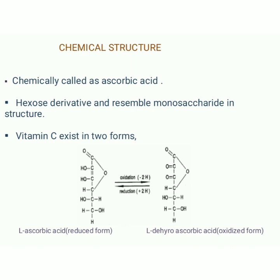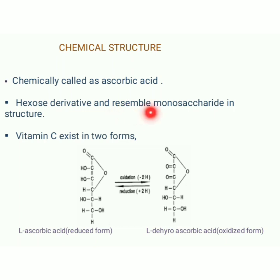Chemically, Vitamin C is called ascorbic acid. Other names include ascorbate. Ascorbic acid is the purest form of Vitamin C. It is a hexose derivative and closely resembles monosaccharides in structure. Vitamin C exists in two forms: the reduced form, called L-ascorbic acid, and the oxidized form, called L-dehydroascorbic acid.